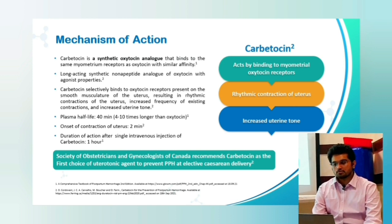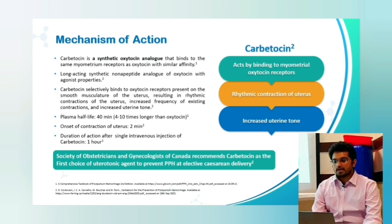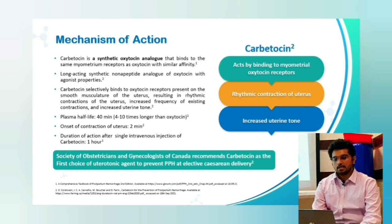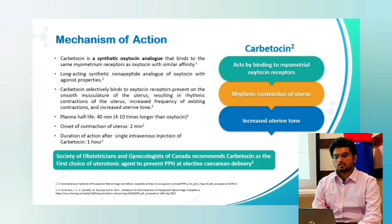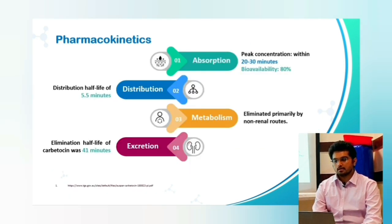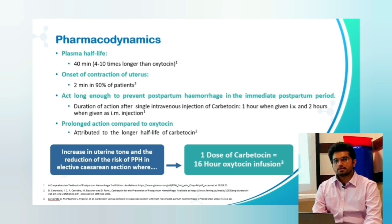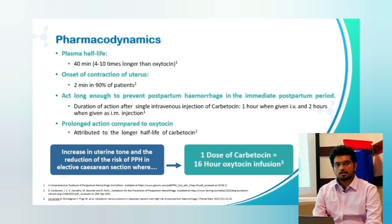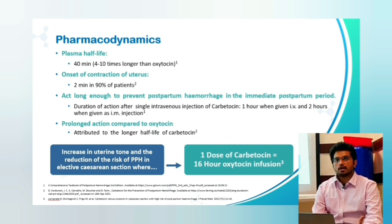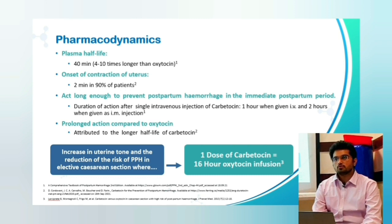The plasma half-life of carbutocin is around 40 minutes, which is 4 to 10 times more than oxytocin. Onset of contraction is within 2 minutes and the duration of action is about 1 hour. The Society of Obstetrics and Gynecology of Canada (SOGC) recommends carbutocin as its first-line uterotonic drug for prevention of PPH in elective caesarean sections. Regarding pharmacokinetics: peak concentration is within 20–30 minutes, bioavailability is 75–80%, distribution half-life is 5.5 minutes, metabolism is primarily by non-renal routes, and elimination half-life is 41 minutes. Pharmacodynamically, onset of contractions is within 1–2 minutes in 90% of patients, duration of action is 1–2 hours IV or IM respectively, and a single dose of carbutocin is equivalent to a 16-hour oxytocin infusion.